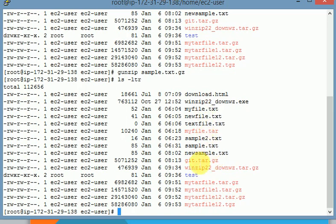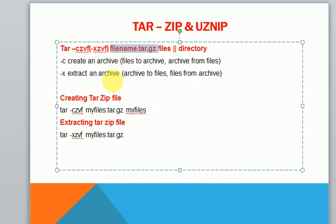The same approach applies to creating archive files using tar. tar is another command used for creating archive files, and we can also extract from archive files. The c option is used for creating archive files, and the x option is used for extracting files from an archive file.